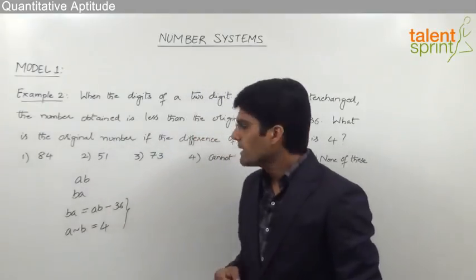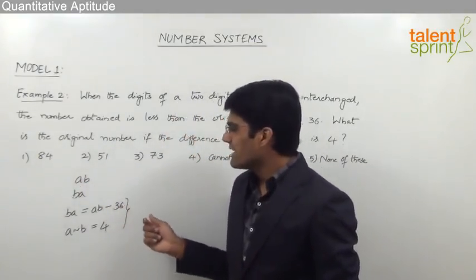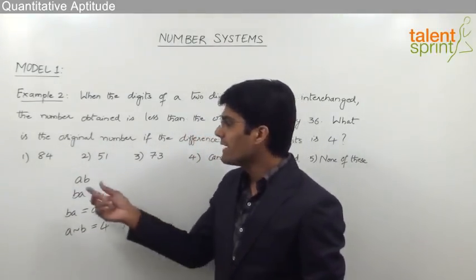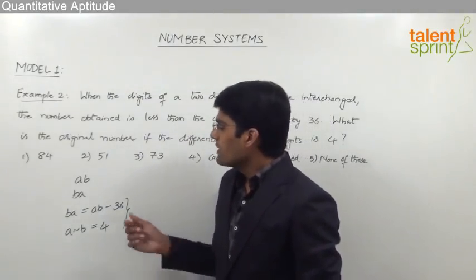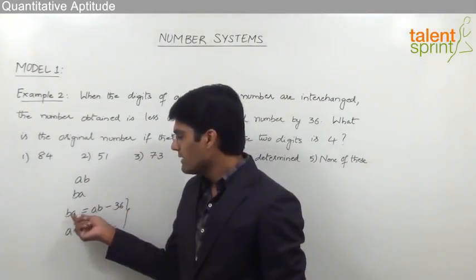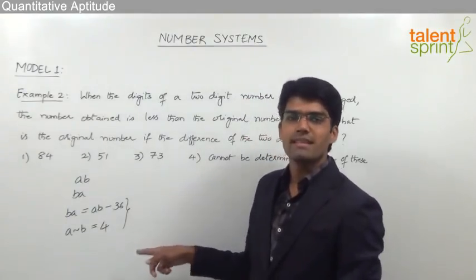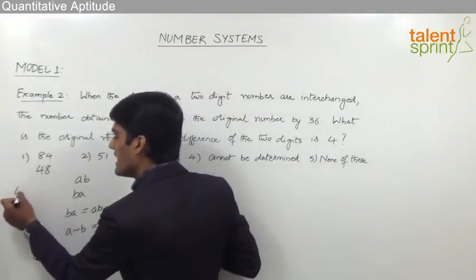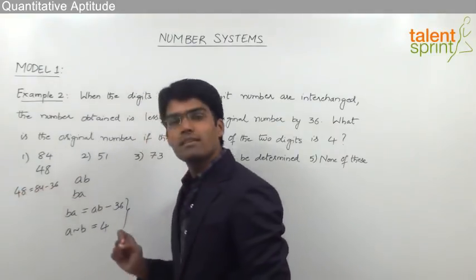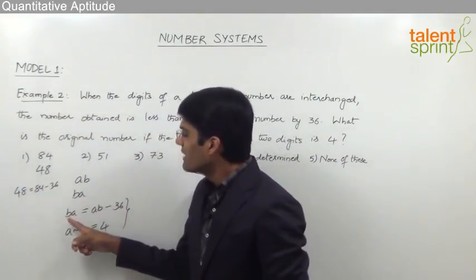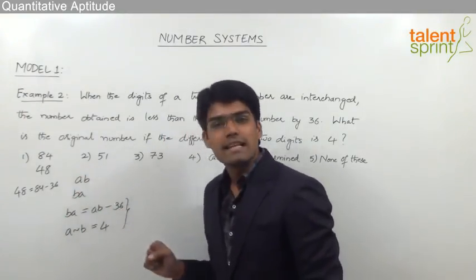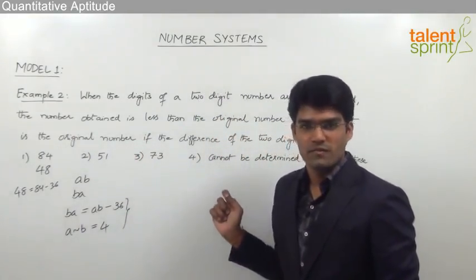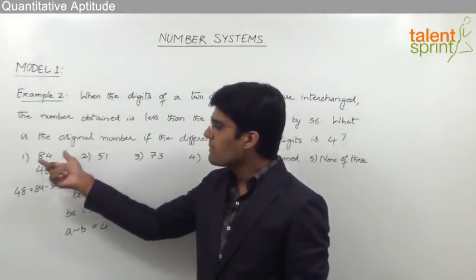Checking option 1, which is 84: the difference between the digits is 8 minus 4 equals 4 — condition 2 is satisfied. Now for condition 1: interchanging 84 gives 48, and 48 equals 84 minus 36, since 84 minus 36 is indeed 48. So option 1 satisfies both conditions and could be the correct answer. But before marking option 1 as the answer, let us verify the remaining options, because there may be a twist.